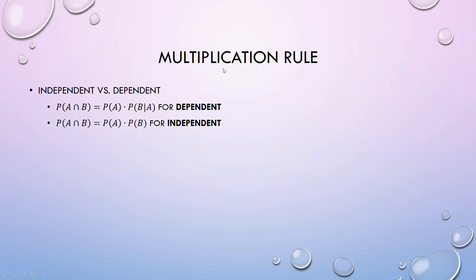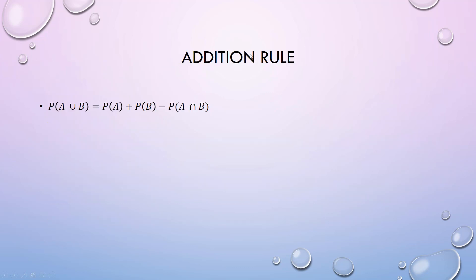I always think of the multiplication rule as 'and' - probability A and B occurs. The addition rule I think of as 'or' - A or B occurs. You have to be careful if they are not mutually exclusive, meaning they both can't happen at once.